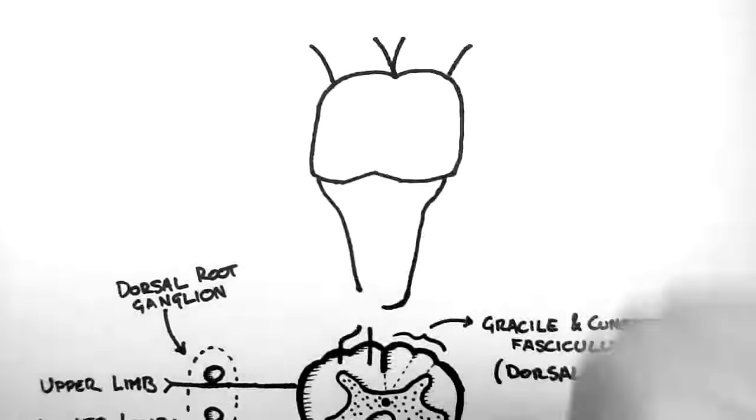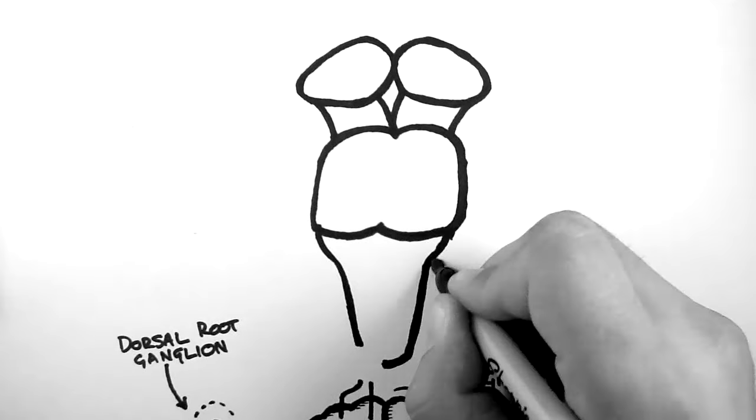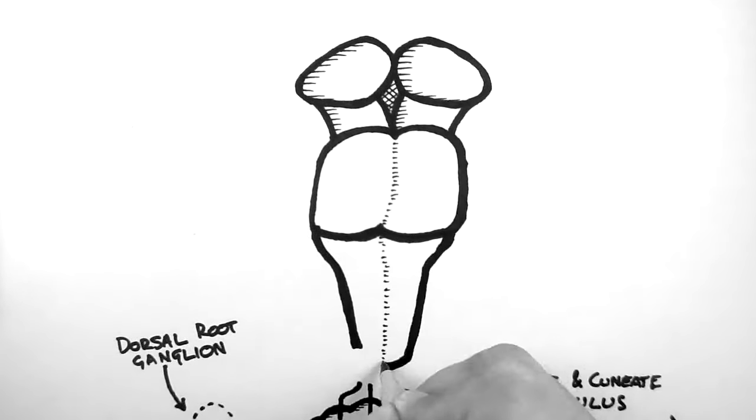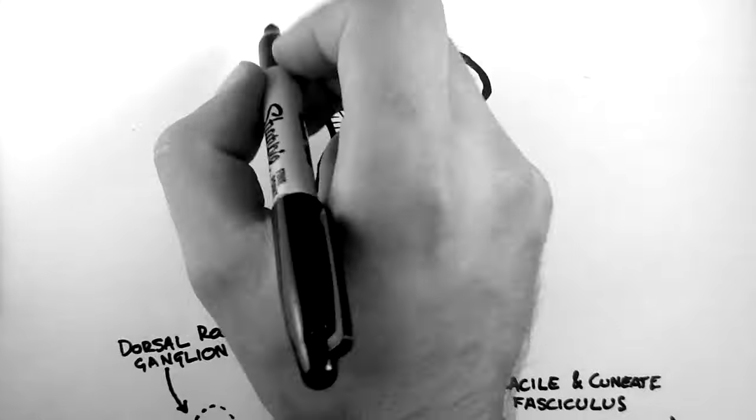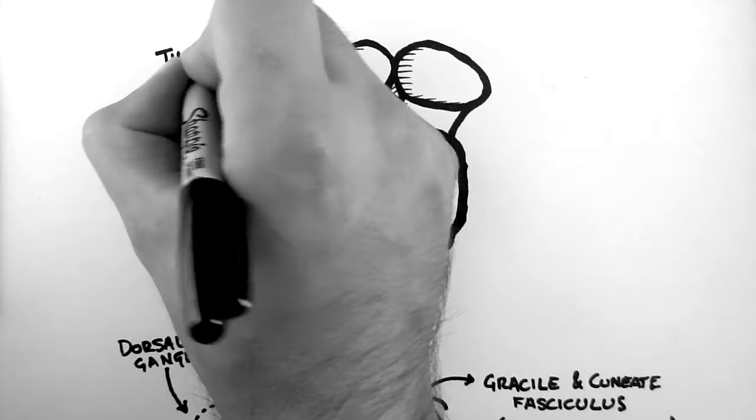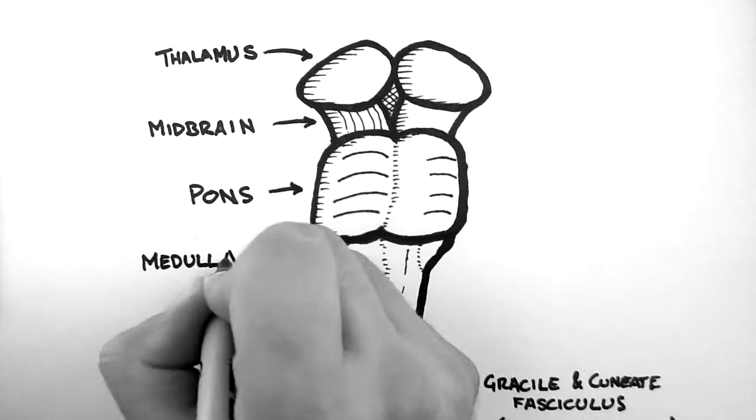From the spinal cord, the pathway ascends through the brain stem. So here is a brain stem plus the thalamus, which is not considered part of the brain stem. So we have the thalamus, the midbrain, the pons, and the medulla oblongata.